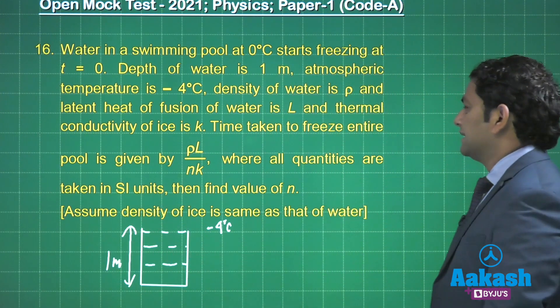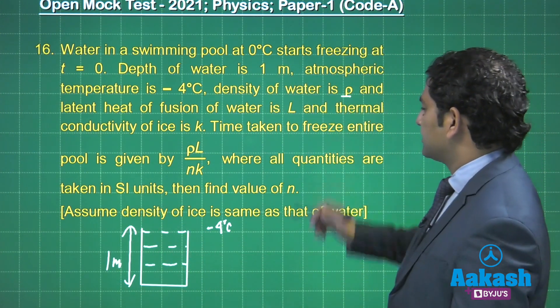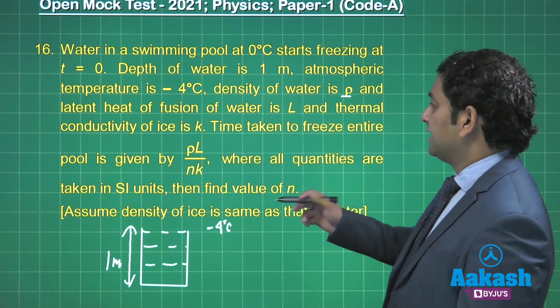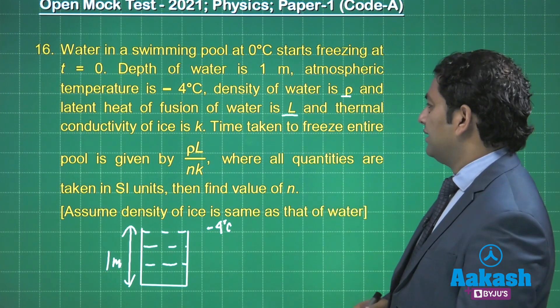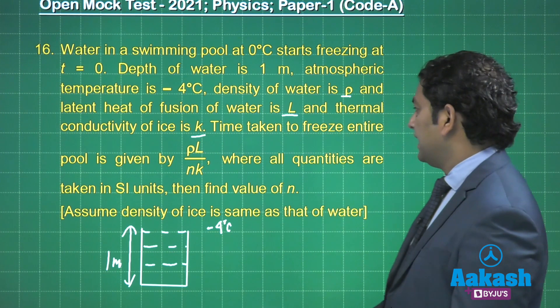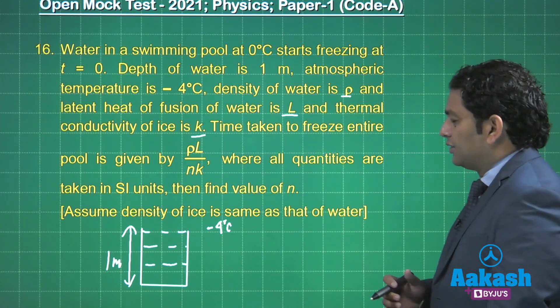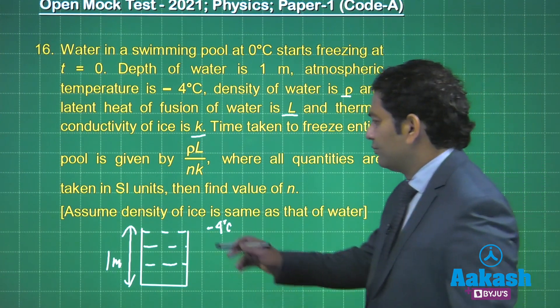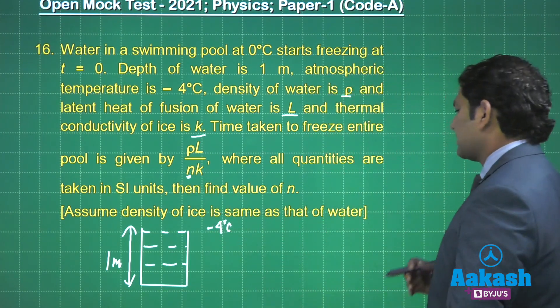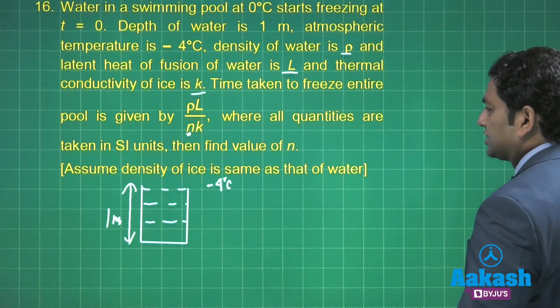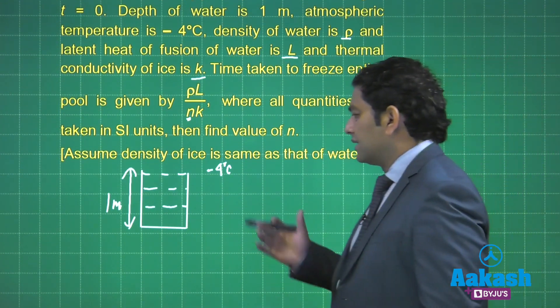And then density of water that has been given as ρ, latent heat of fusion that's capital L, thermal conductivity of ice is k. Time taken to freeze the entire pool, we need to solve for the time and suitably we need to equate it to n. This is a very regular pattern question, but still, at any instant, let's say this y length of water has already frozen.